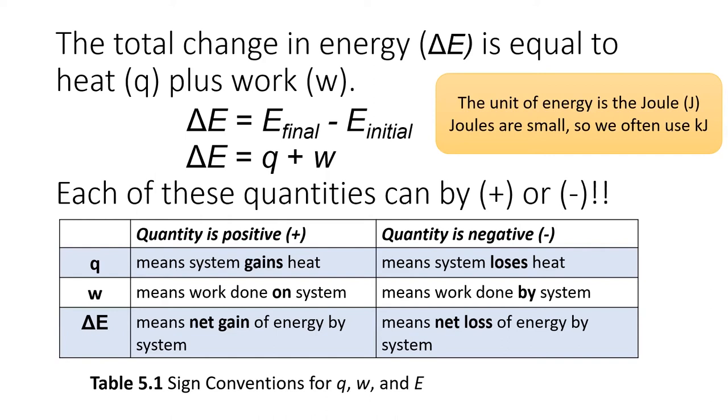When W is positive, that means that work has been done on the system. When W is negative, we say that work is done by the system or that the system does work.